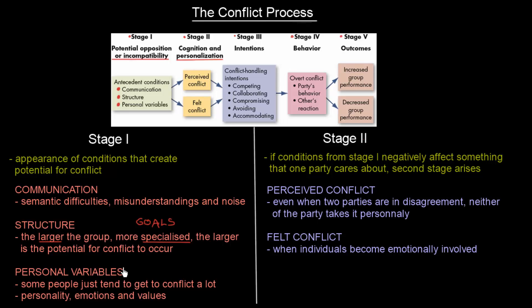Finally, we have personal variables. Some people just tend to get into conflict a lot, because of three points: personality, emotions, and values. If we are communicating with someone and we have very different values — similar to goals — we simply tend to get into conflict. Emotions are short-term, fast reactions to events, and if we are in a bad mood, conflict can occur. And if the other party's personality does not fit us very well, again, we can get into conflict.